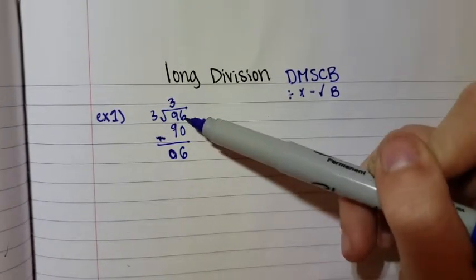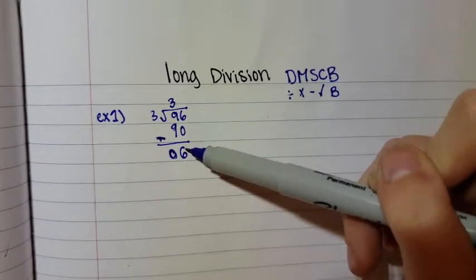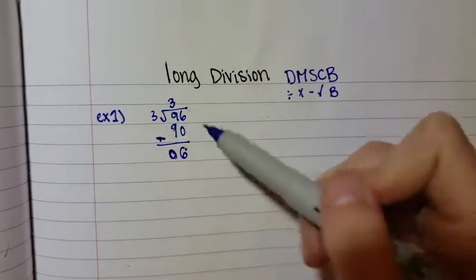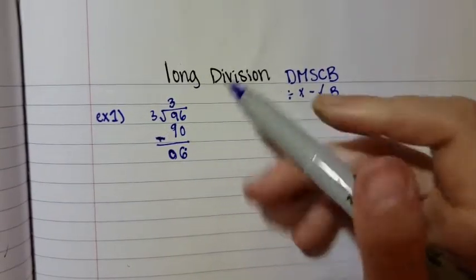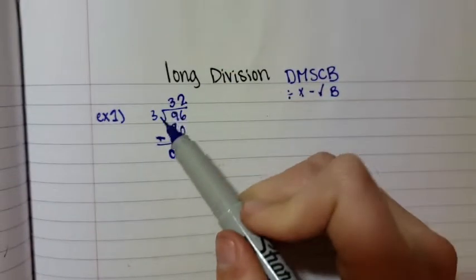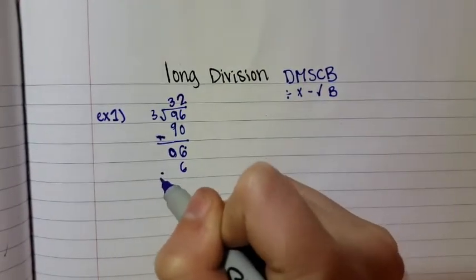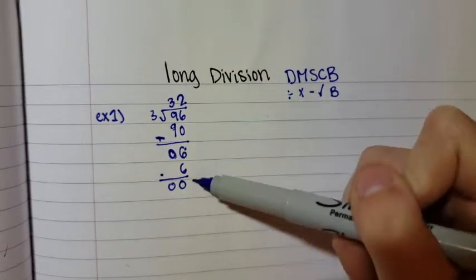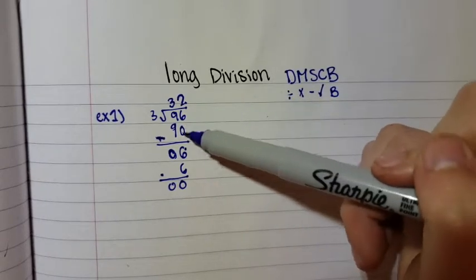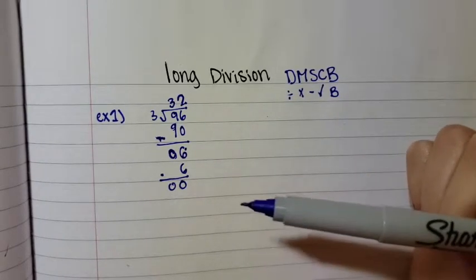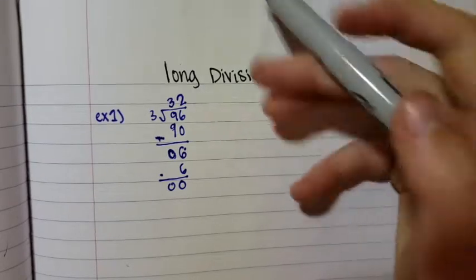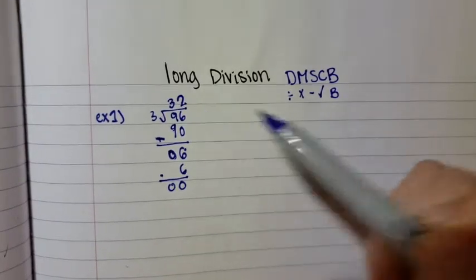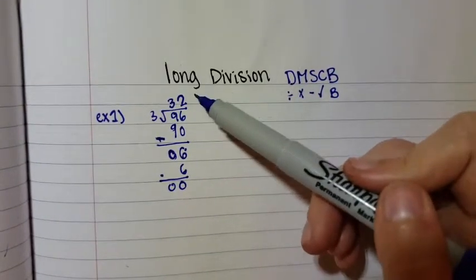While I subtracted, I also brought down my 6. Now you're just going to repeat that. How many times does 3 go into 6? Which is 2 times. 3 times 2 equals 6, and subtract. If there is another number here, that's when you would bring down as well. Your answer is on top of your division sign, so it's 32. 3 goes into 96 32 times.